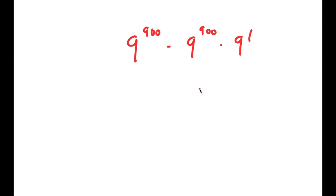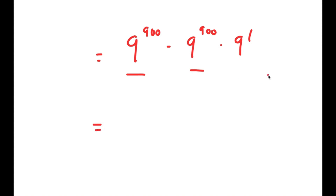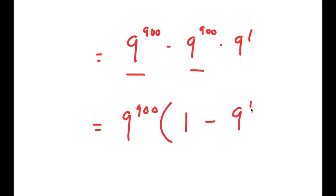Now from here, these two terms both have 9 to the power of 900 in them, so I'm going to factor out 9 to the power of 900 — which is what I said I was going to do at the beginning of the video. So now I get 9 to the power of 900 times the quantity 1 minus 9 to the power of 1.